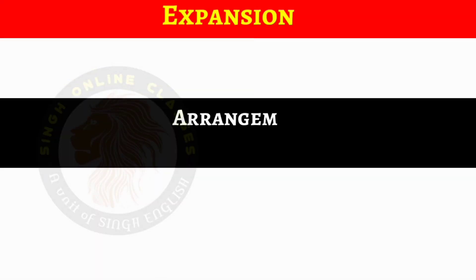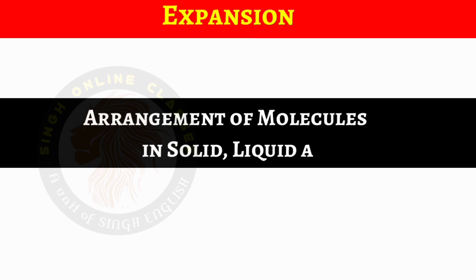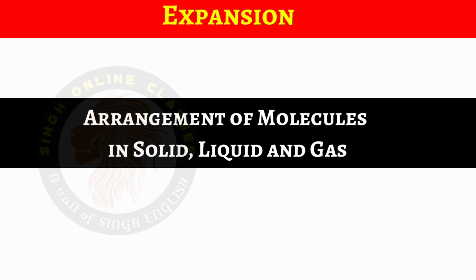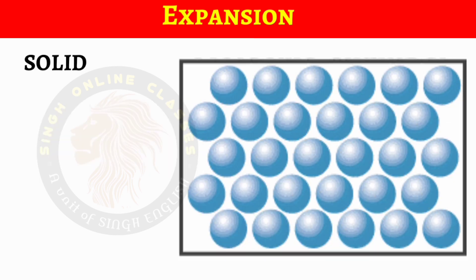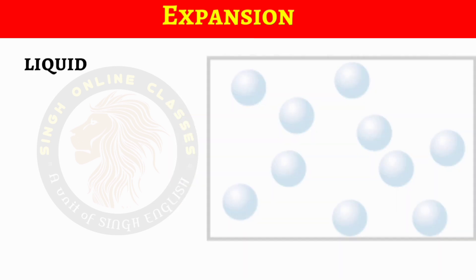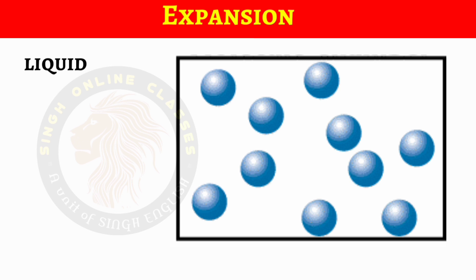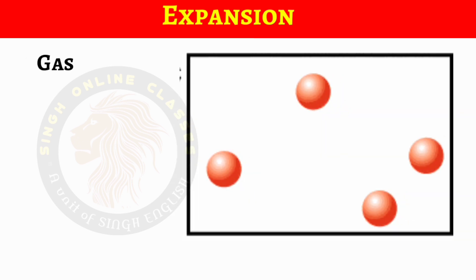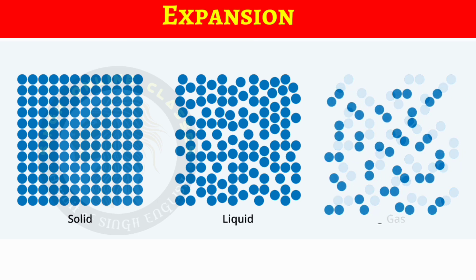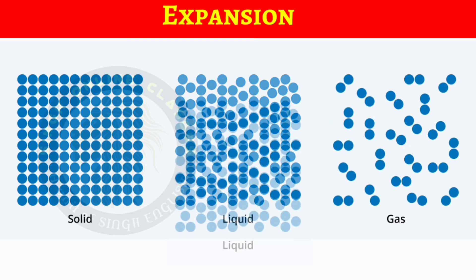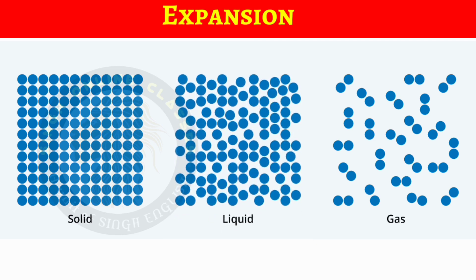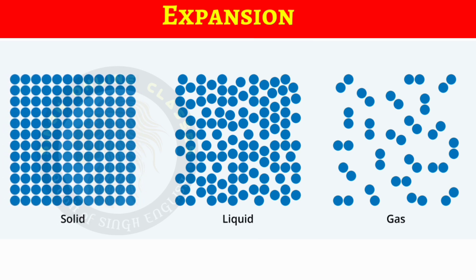New topic: expansion. Before starting expansion, I would like to explain the arrangement of molecules in solids, liquids, and gases. In solids, molecules are tightly packed. In liquids, molecules are loosely packed in comparison to solids. In gases, molecules are very far from one another. This is why gaseous particles move freely at high speeds, liquid particles also move around because there is little space between them, but in solids, particles cannot move because they are tightly packed.